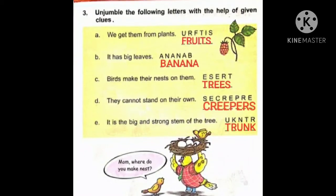Most important thing — you have to learn the spelling of fruits: F-R-U-I-T-S. Fruits. Number B: It has big leaves. Hamein pata hai kis ped ke patte bade hote hai? Banana. Banana has big leaves. So the answer will be B-A-N-A-N-A. Banana.